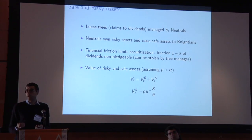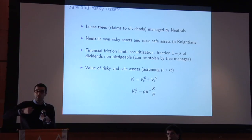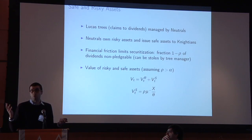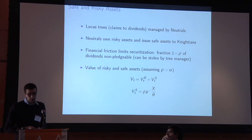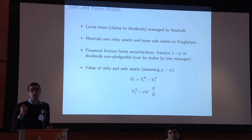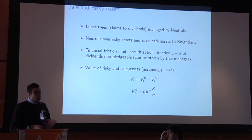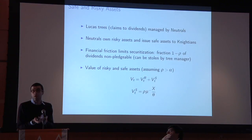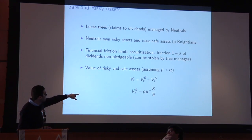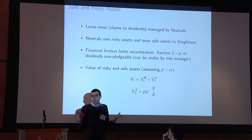I introduce a financial friction on the securitization: a fraction of the dividends accruing on the trees that neutrals manage cannot be pledged to outside investors — they could run away with it, or any kind of agency problem you might imagine between these managers and investors. So they can securitize, but only up to a limit. The parameter rho captures the securitization capacity of the economy. The supply of safe assets is increasing in the securitization capacity — the easier it is to securitize, the more safe assets are generated.